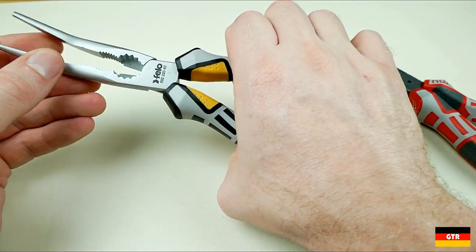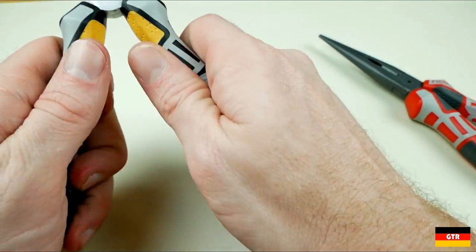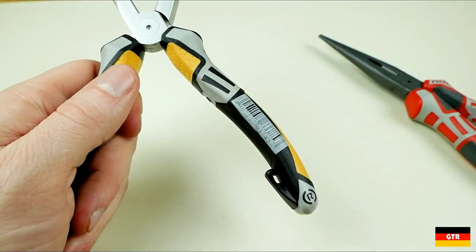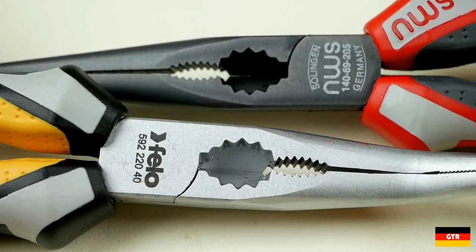To examine the differences, we're going to use these two NWS pliers that are nearly identical and have different finishes. As you can see, it's pretty obvious that this set of Felo pliers is a custom NWS rebrand. The only differences with the equivalent NWS model would be the handle colors and the laser etched labeling.